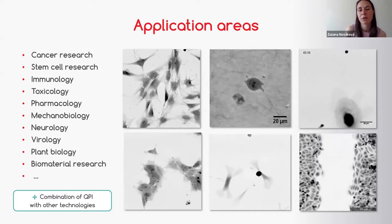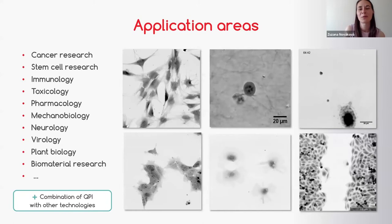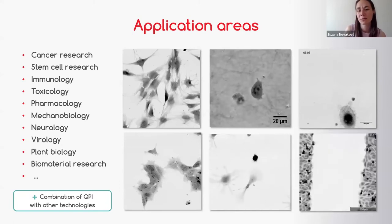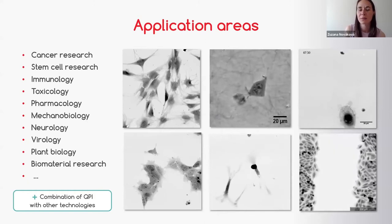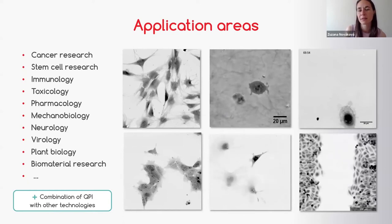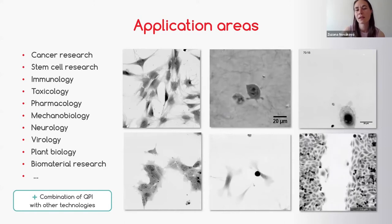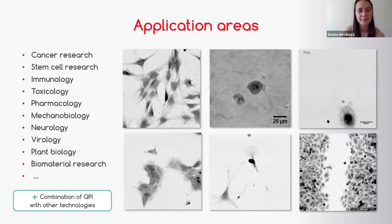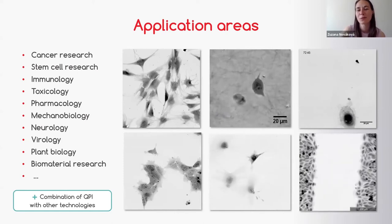If you combine it with tomography, then you get 3D data, so you can also do QPI in 3D. If you combine it with flow systems, then you can measure, for example, the mechanical properties of the refractive index of the cell membrane and how it's affected by the flow.